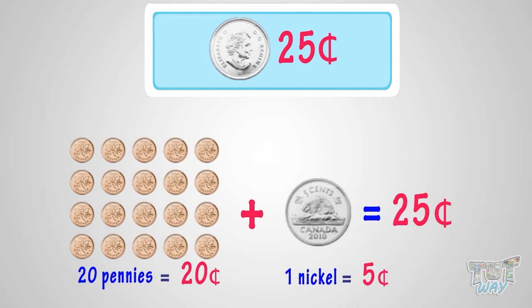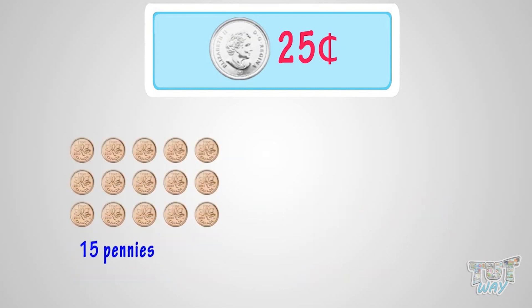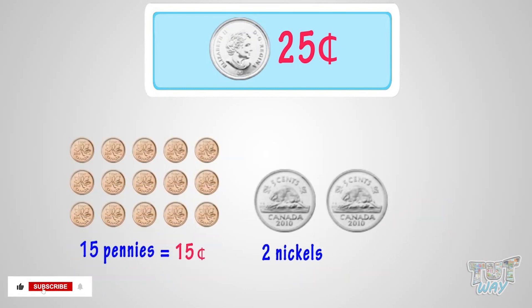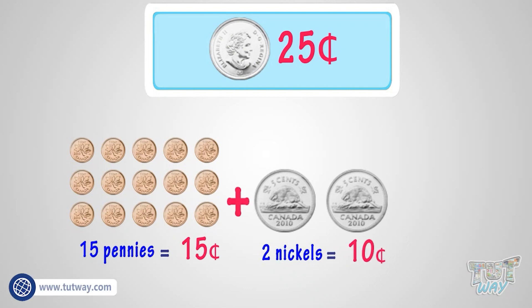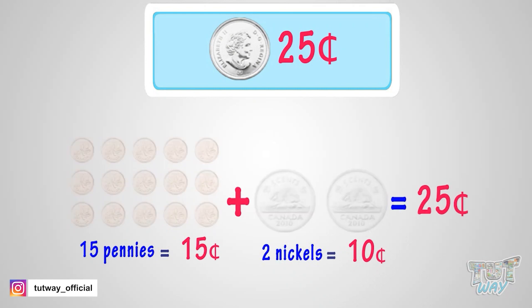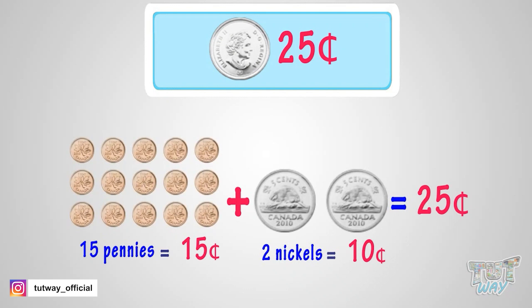Another way can be 15 pennies and 2 nickels. Let's see how. 15 pennies will make 15 cents, and 2 nickels will make 10 cents. So in total we will have 25 cents. So we can exchange this set of coins too for a quarter.